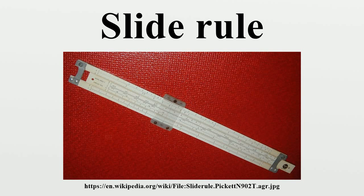In addition to the logarithmic scales, some slide rules have other mathematical functions encoded on auxiliary scales. The most popular were trigonometric (usually sine and tangent), common logarithm, natural logarithm and exponential scales. Some rules include a Pythagorean scale to figure sides of triangles, and a scale to figure circles. Others feature scales for calculating hyperbolic functions. On linear rules, the scales and their labeling are highly standardized, with variation usually occurring only in terms of which scales are included and in what order. The binary slide rule manufactured by Gilson in 1931 performed addition and subtraction functions limited to fractions, roots and powers.